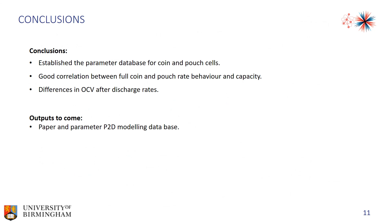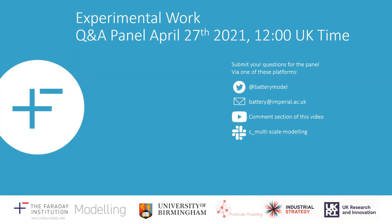Here are the conclusions. By performing the variable charge/discharge tests, GITT, and EIS tests, and electrode calibration, we obtained 35 parameters and established a parameter database for coin and pouch cells. The results show there is a good correlation between full-coin and pouch cells in behavior and capacity. However, there is a small difference in OCV after discharge at high C-rates, possibly due to mass loading deviation on the electrode. We have finished the paper draft and hope to provide parameters and a database for P2D modeling. If you have any suggestions or questions, please let us know.